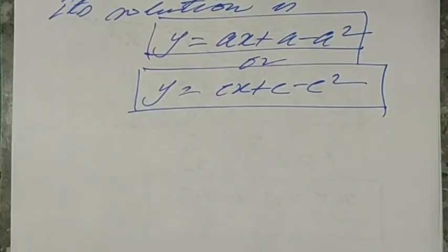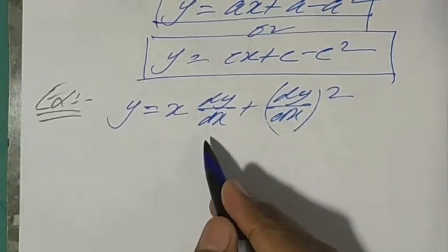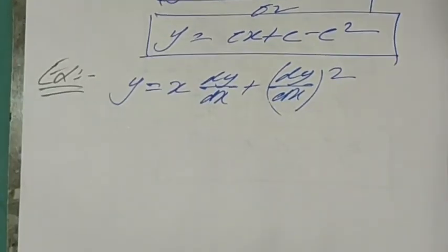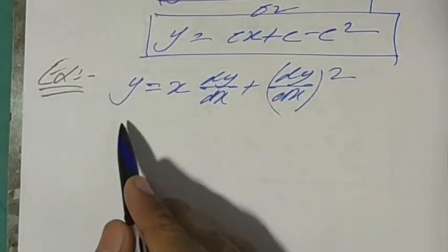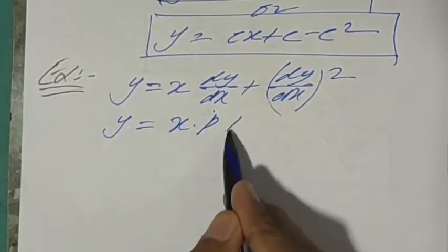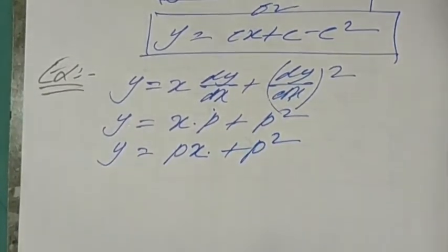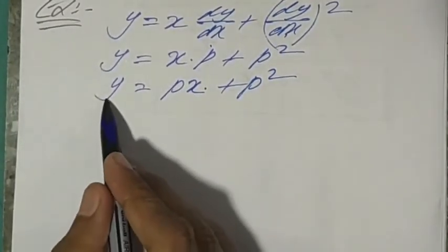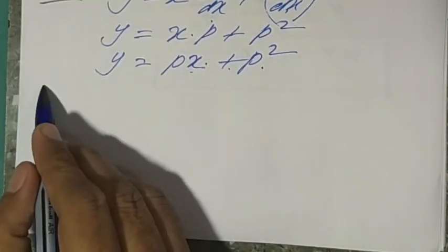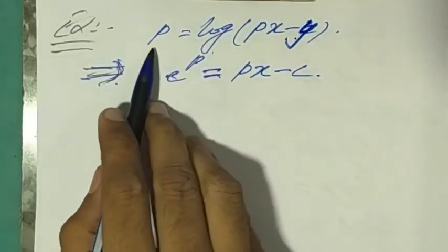Sometimes the equation is given with dy/dx notation instead of p, making Clairaut's form less obvious. For example, if we replace dy/dx by p we get y = px + p². This is clearly a Clairaut's equation, and its solution is y = cx + c².